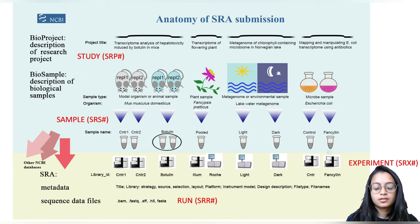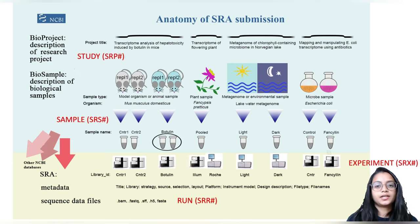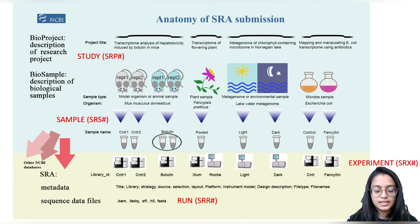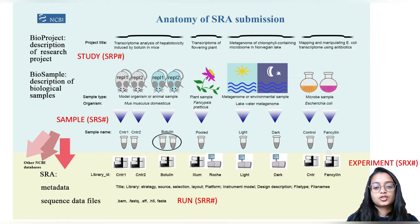We can also find information about the experiment, which details information about the sequencer and details about the library preparation. These records start with accession SRX. Lastly, we have runs, which start with accession SRR, and these are actually associated with the raw files or the sequencing files. Today we are going to be retrieving the sequencing data using the SRR IDs, and I'll demonstrate how to find the SRR IDs associated with the samples we're interested in.